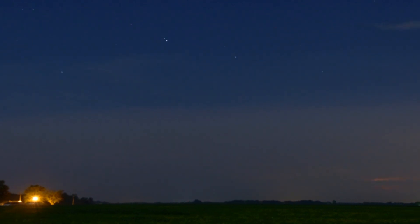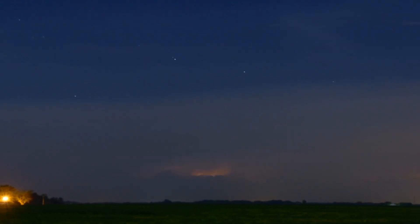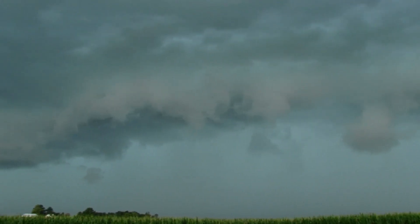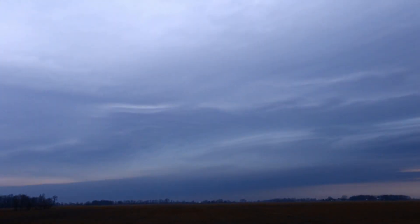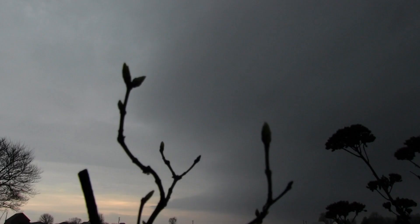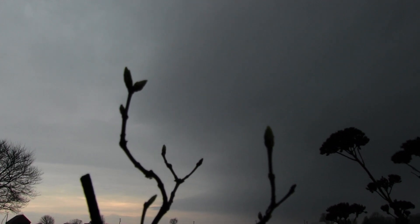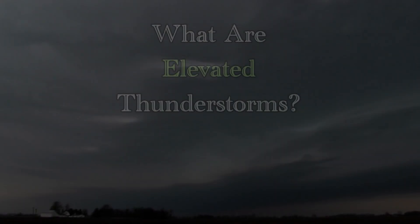Thunderstorms. Within our atmosphere, there are many different types of thunderstorms. When people think of thunderstorms, they often consider such classifications as supercells, squall lines, and even pulse storms. But there is one type of thunderstorm which is different from all the others, and many people may not be aware of it. In today's video, we're going to examine the science behind it and answer the question: what are elevated thunderstorms?